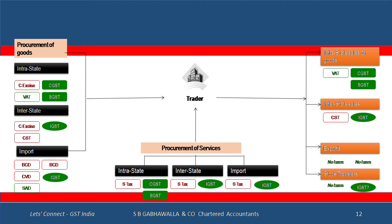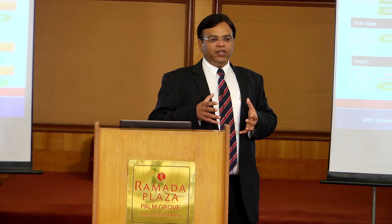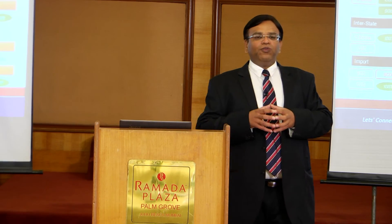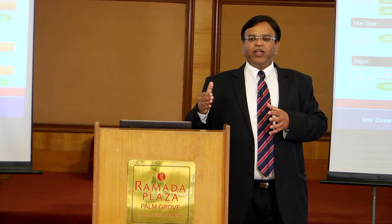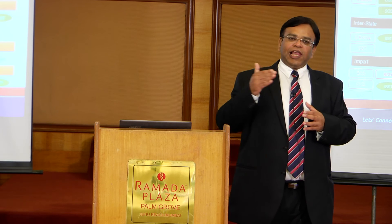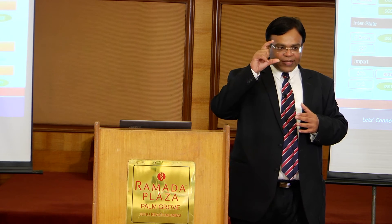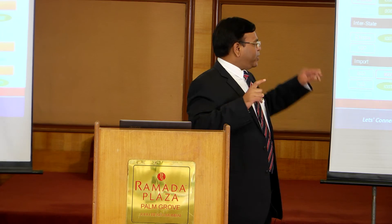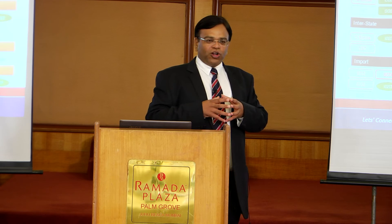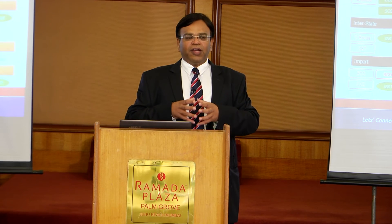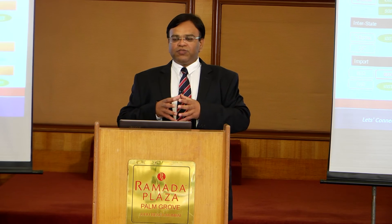Moving forward, instead of service tax you will have CGST, SGST, and IGST, and those taxes are available as a credit to the trader. So many rates which today are sunk costs become creditable items in the future. There's a lot of opportunity for a trader to look at reduction in price or increase in profit. Not even factoring the effective rate reduction — 12.5% VAT and 12.5% excise cumulatively is about 28–29%, which itself is likely to fall to around 18% — so there's an 8 to 10 percent reduction in the tax rate itself.